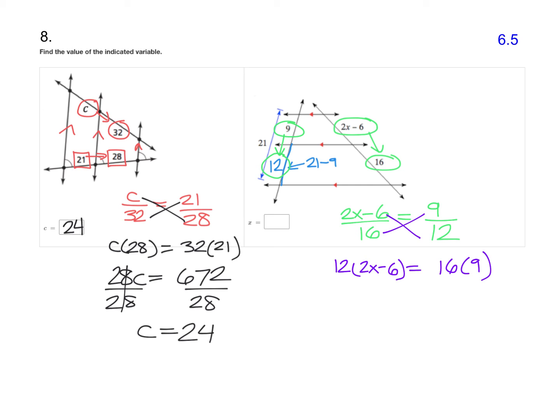On the left side, you need to do your distributive property. So that would be 12 times 2X, so 24X. 12 times 6 is 72. So 24X minus 72 equals 9 times 16, which is 144.